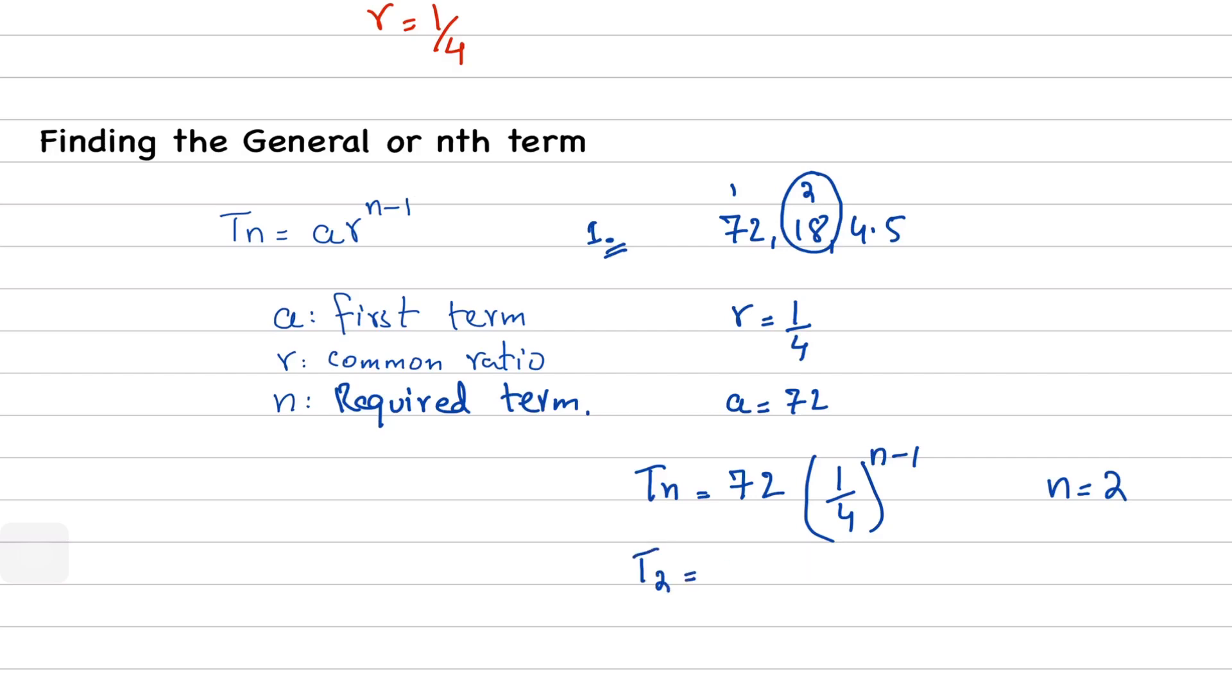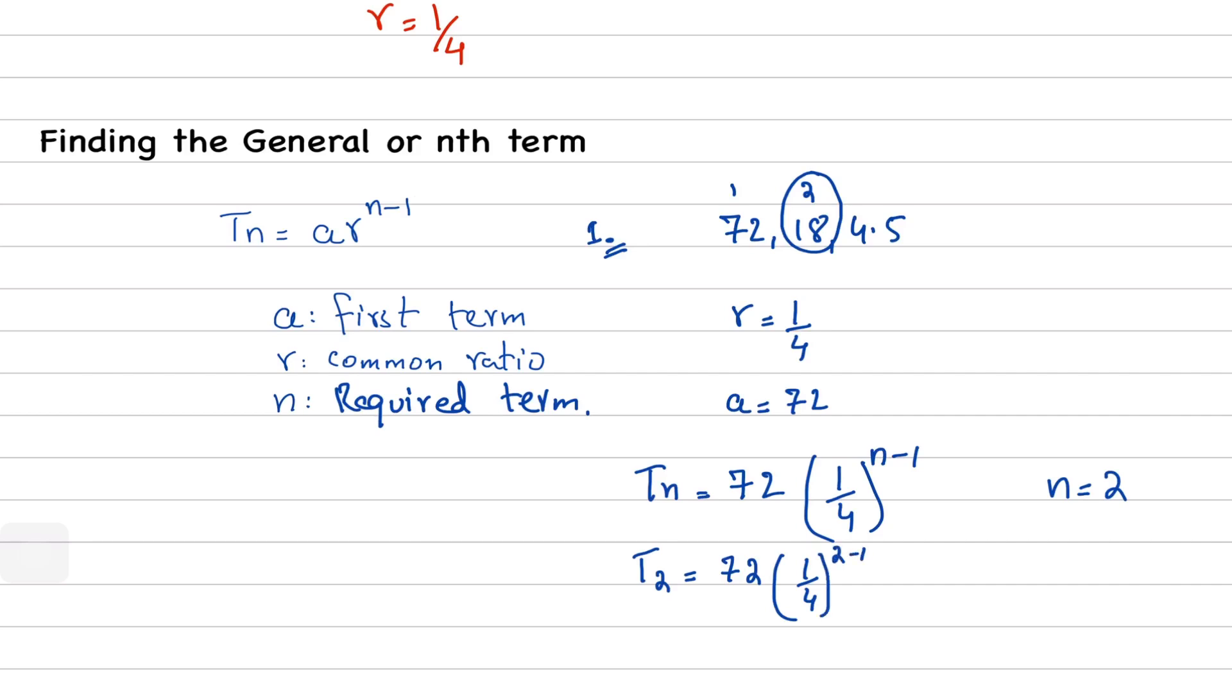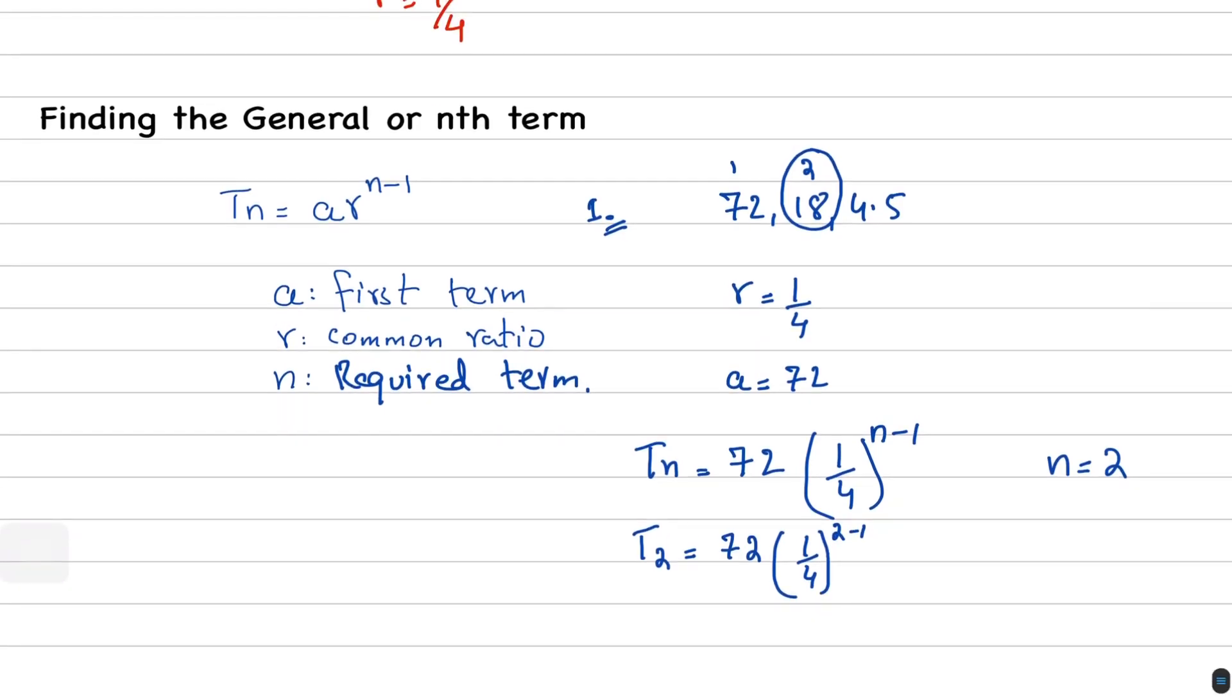T2, let's see: 72 as it is, 1 upon 4 raised to the power 2 minus 1. So 2 minus 1, we know that it is 1. So 1 upon 4 to the power 1, 1 upon 4 will remain. So 72 multiplied by 1 upon 4, which is 18. That means we have verified it completely.